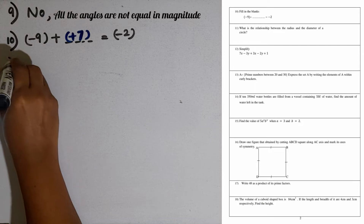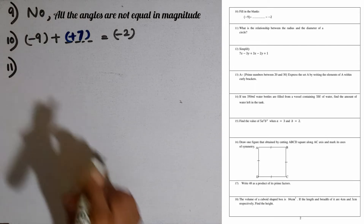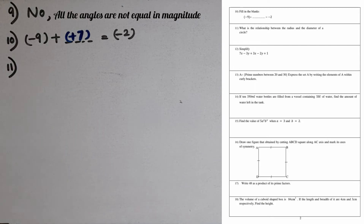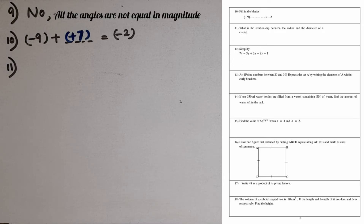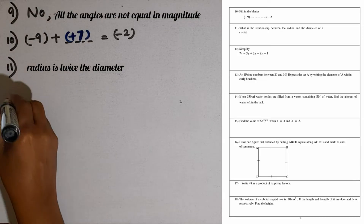Question number 11. What is the relationship between the radius and the diameter of a circle? The diameter is twice the radius. That is the relationship.